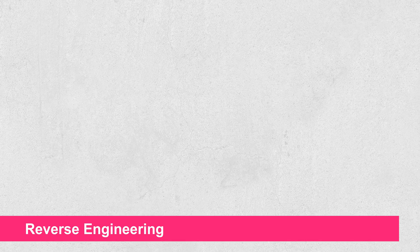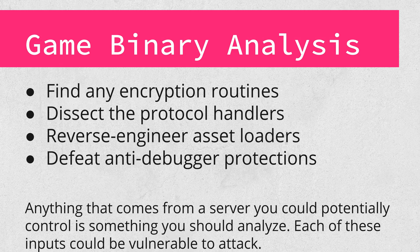Now that we've got networking basics out of the way, let's talk reverse engineering. Most games you'll be interested in hacking aren't open source, so knowing how to reverse engineer the different pieces is critical. The most obvious way is to start by disassembling and analyzing the game client binary. Key things to look for include finding the encryption routines, finding and dissecting the code handling the game protocol, reverse engineering asset loading code, and finding and defeating anti-debugging mechanisms. Anything that can come from a server in a way you can control is something you need to look at — each of those is a potential bug.